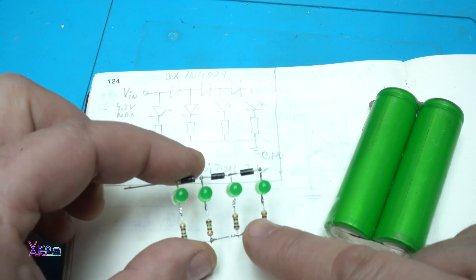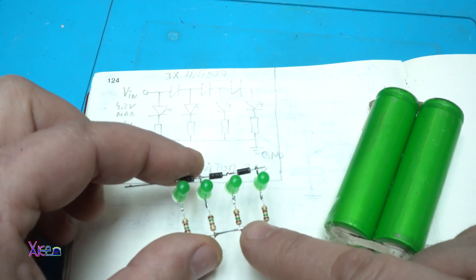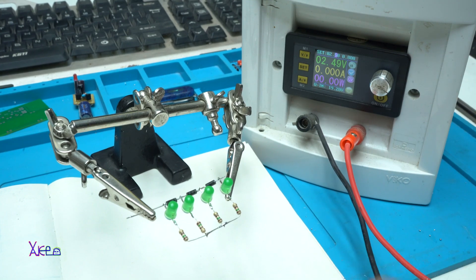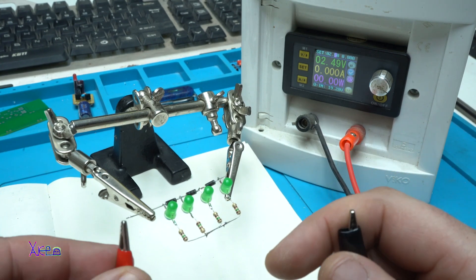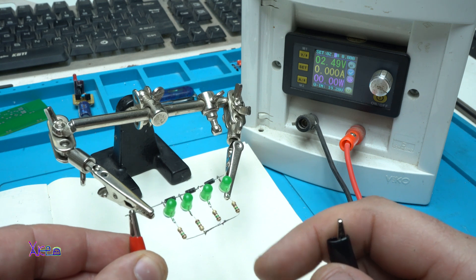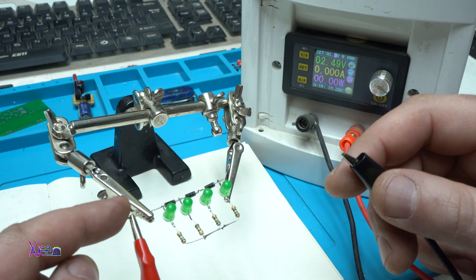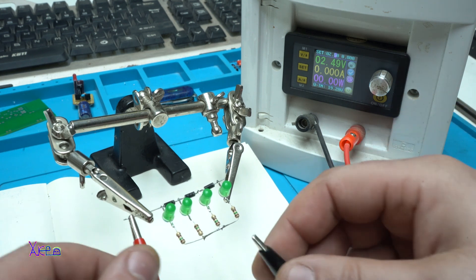I'm gonna hook up my power supply so I can test it and show you that it's working. With my adjustable power supply I'm gonna show you that this voltage monitor is working great. On this wire goes the positive and ground on the resistors.